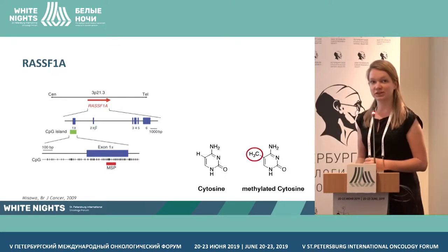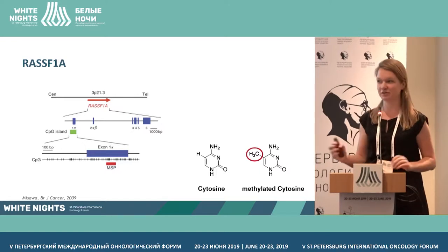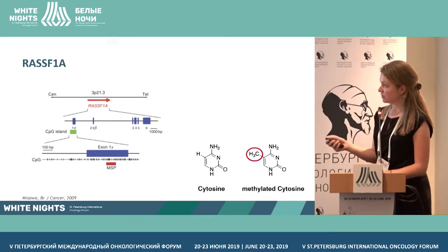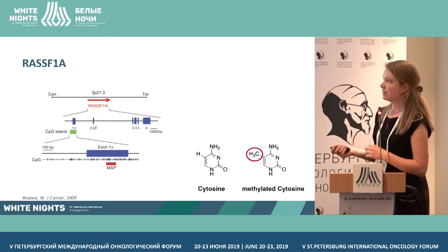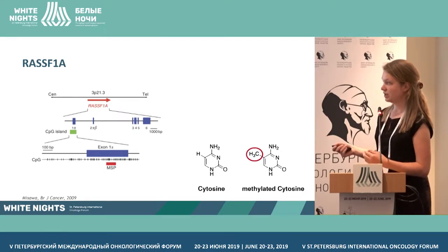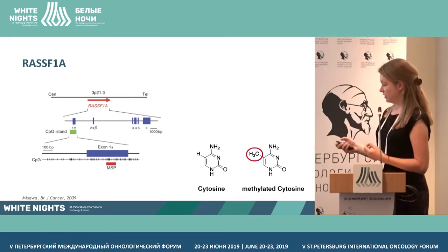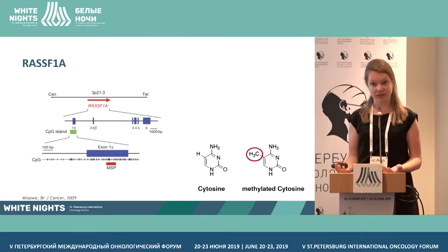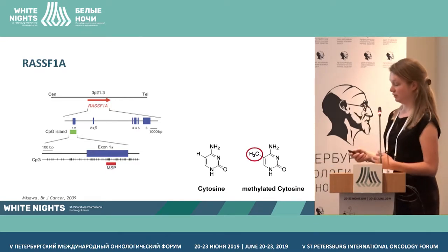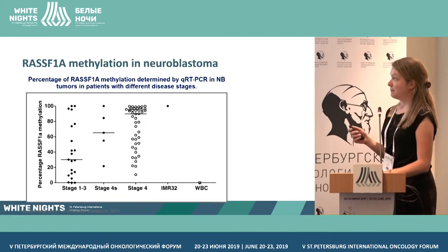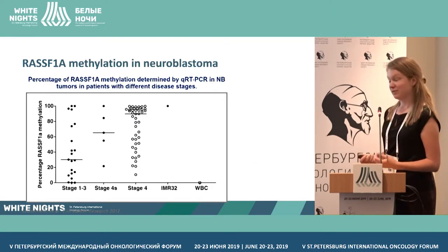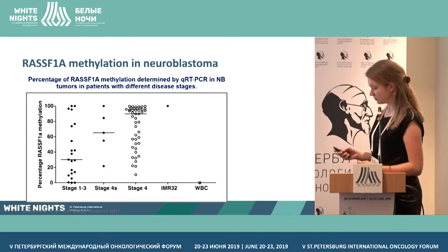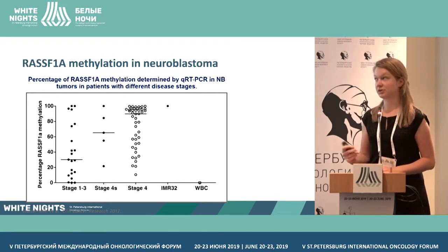So we have an alternative strategy using the methylation of the RASSF1A gene. RASSF1A is a tumor suppressor gene that is frequently methylated in various cancers, and also in neuroblastoma. The RASSF1A has a lot of CpG islands — the CG repeats — and those cytosines can have an extra methyl group. If the gene is methylated, it's inactivated; it's a tumor suppressor gene, so that's beneficial for the tumor. Janine Stutterheim showed that all stage 4 tumors have RASSF1A hypermethylation.